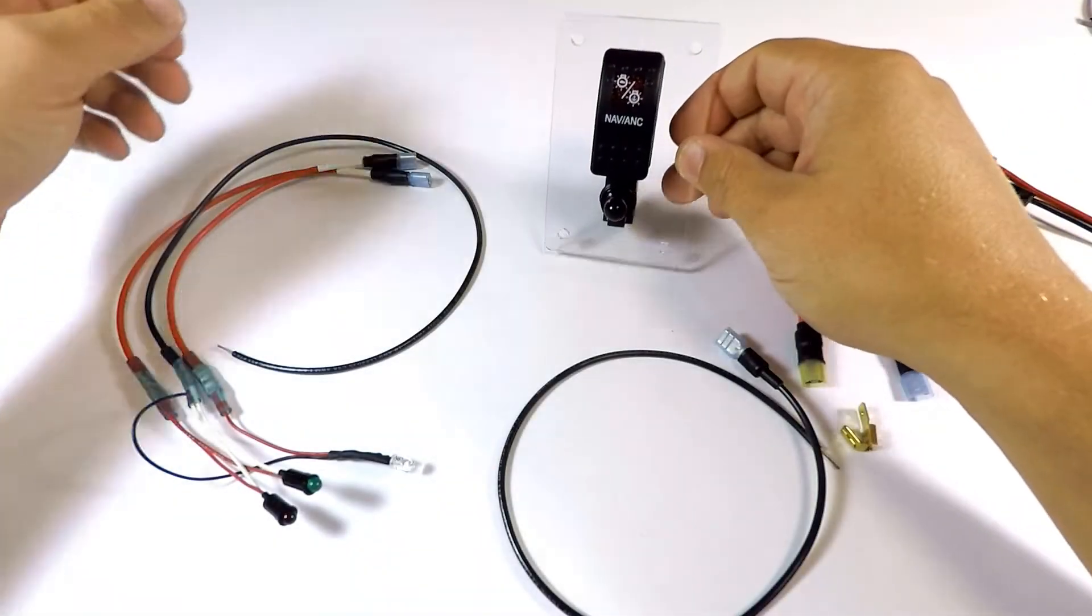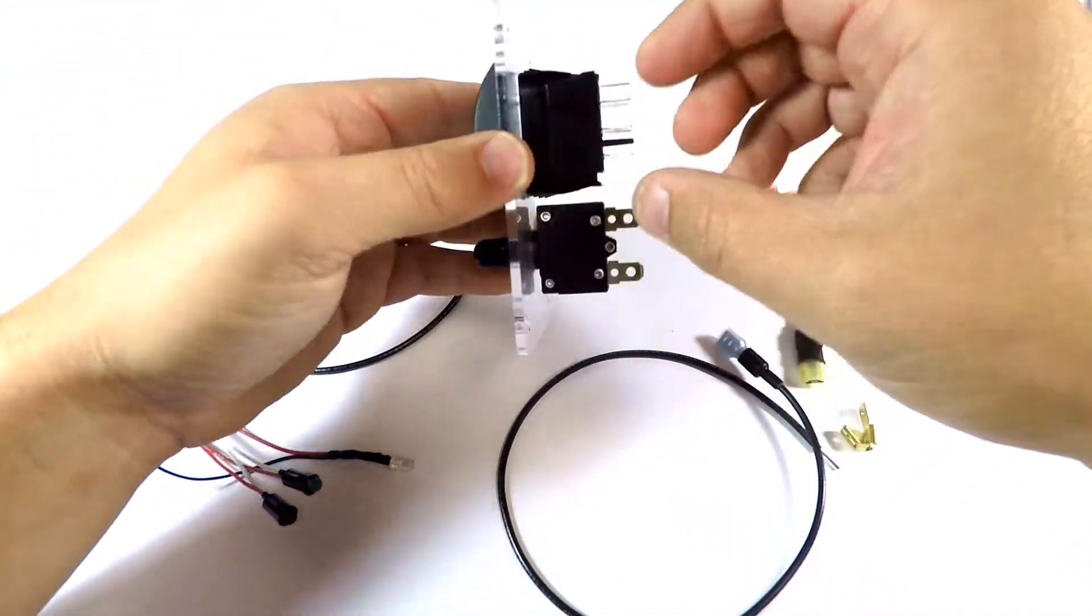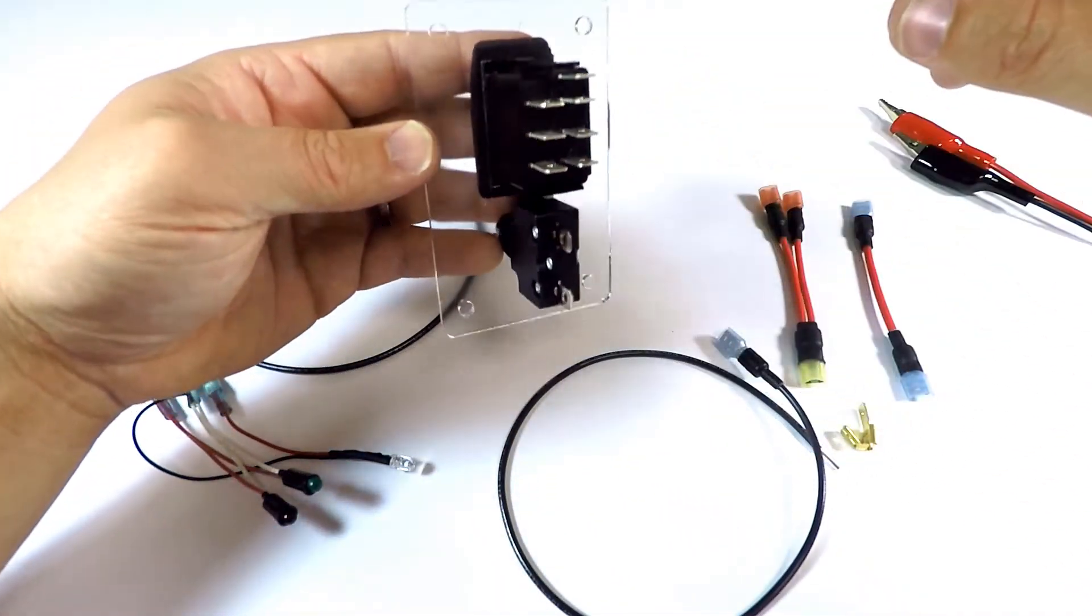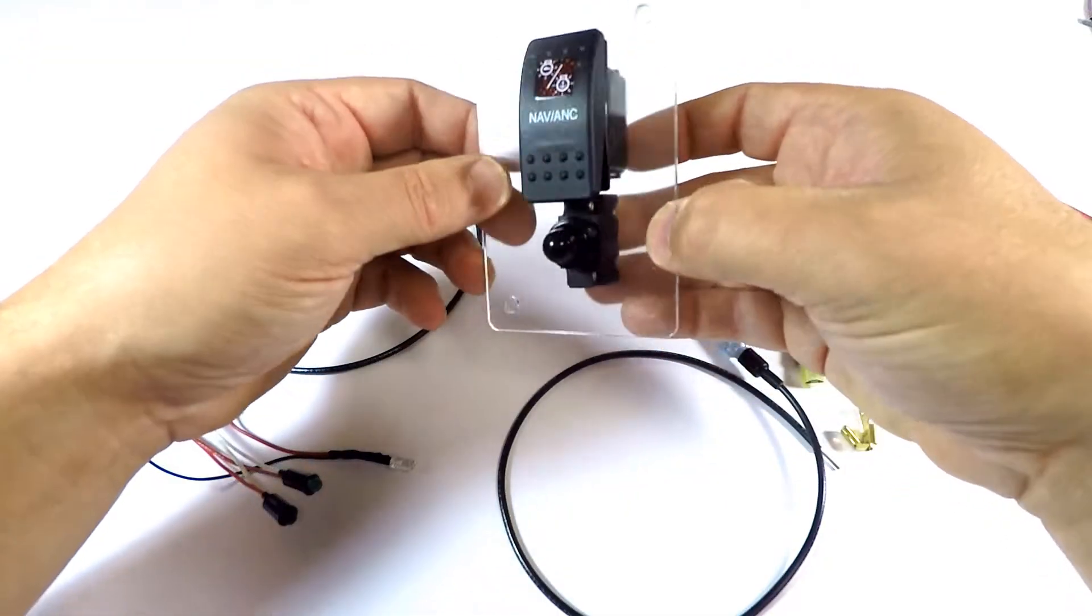Hi, my name is Eric with New Wire Marine, and today we're going to be looking at how to wire a navigation anchor light switch with a VJD1D66B.